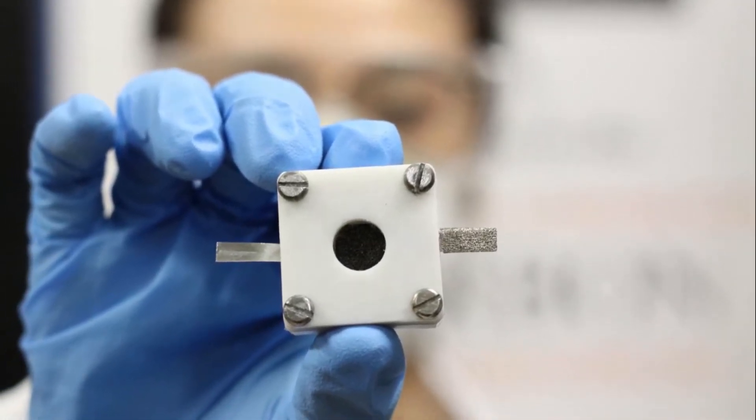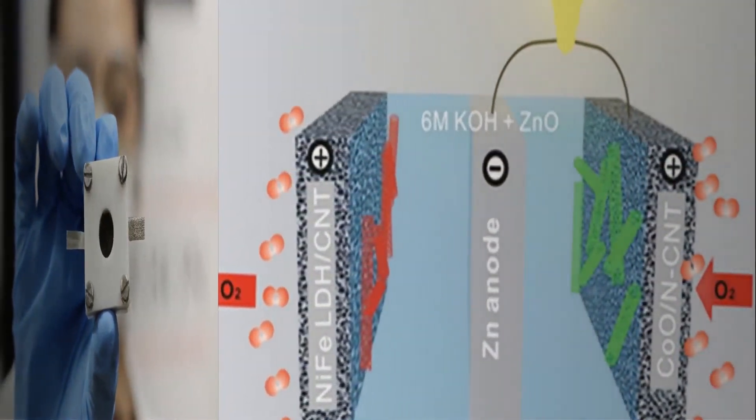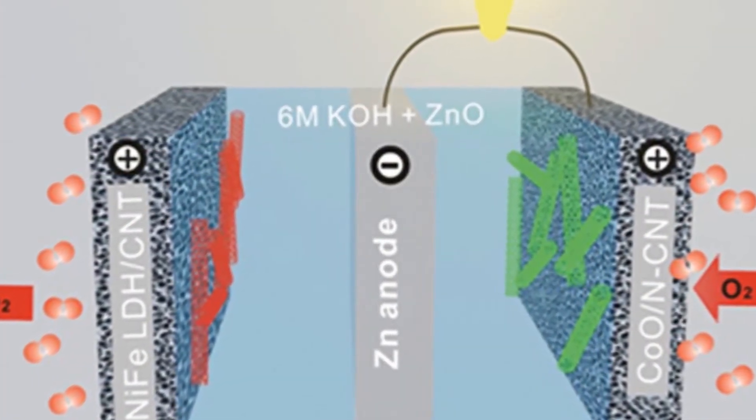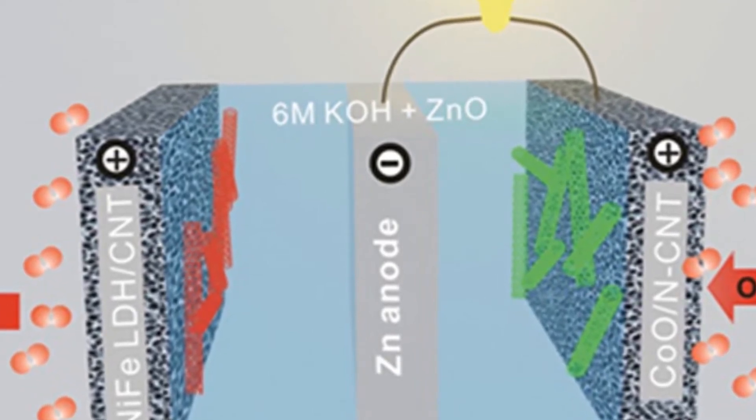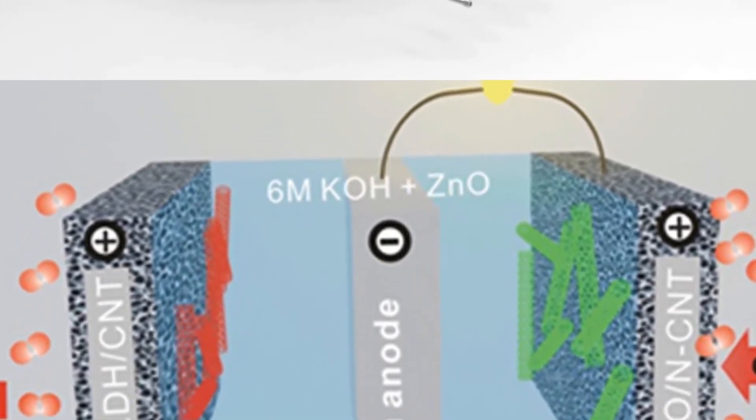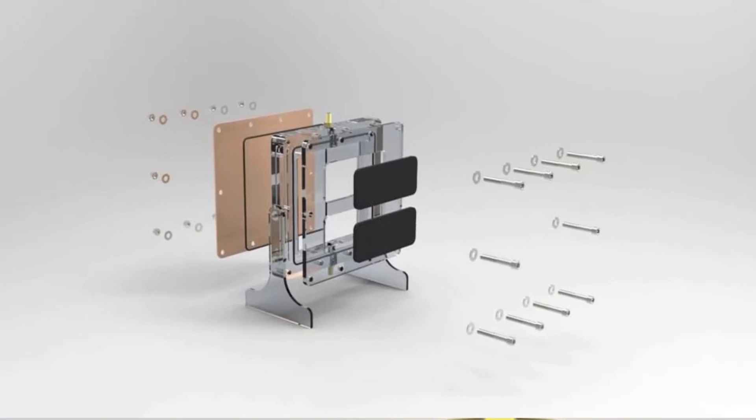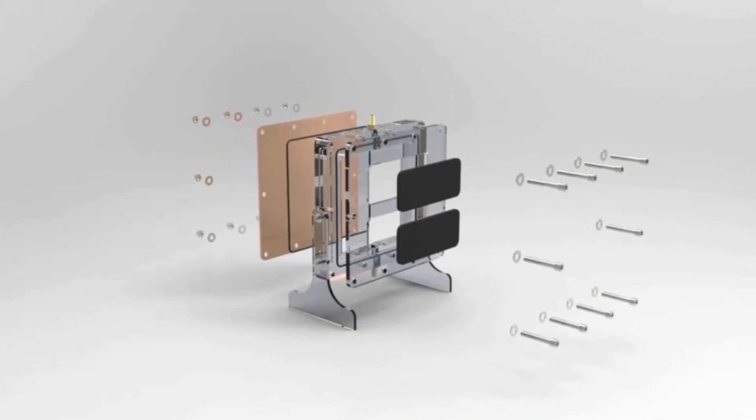Up until now, rechargeable zinc air batteries have been made with expensive precious metal catalysts, such as platinum and iridium oxide. In contrast, our method produces a family of new high-performance and low-cost catalysts, he said.